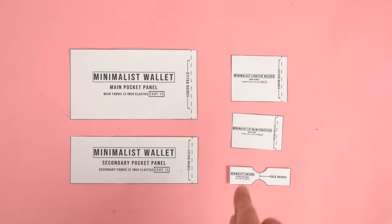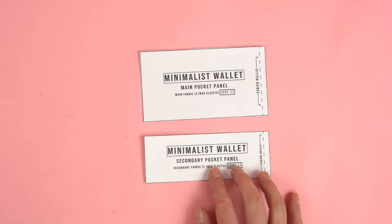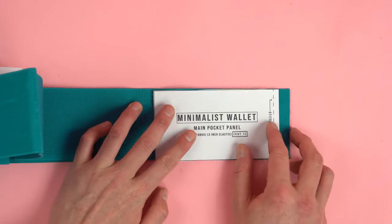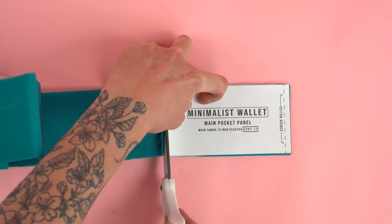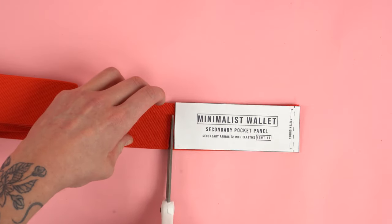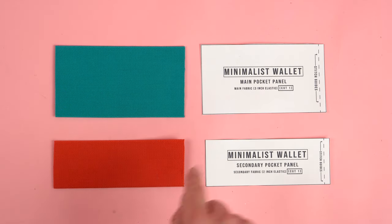So once you have your pattern downloaded it's time to move into cutting. Cut out all of your pattern pieces on the black line and we're gonna start with the main pocket panel and the secondary pocket panel. For the wallet we're gonna be using three inch and two and a half inch elastic. Place the pattern on your elastic and cut. And the key is to make sure that both of these panels are cut as even as possible.